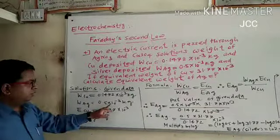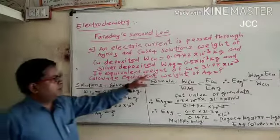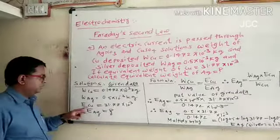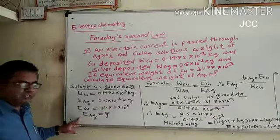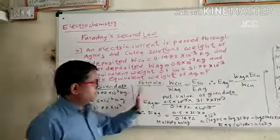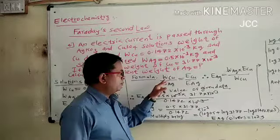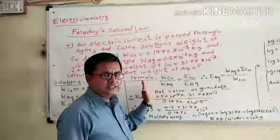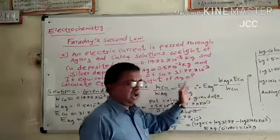WAg = 0.5 × 10^-3 kg. The equivalent value is 31.77 × 10^-3 kg. ECu is 31.77, so EAg can be found using Faraday's second law for cells in series.